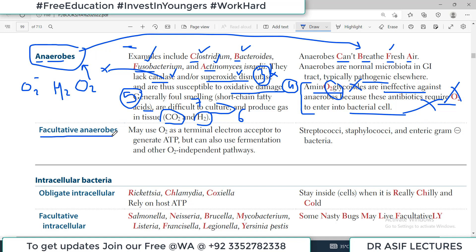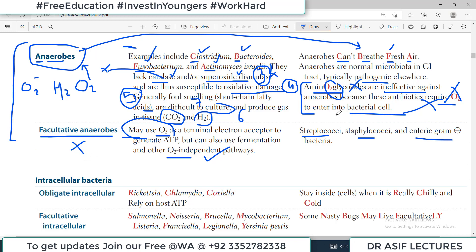Another category is facultative anaerobes. Facultative anaerobes may use oxygen as a terminal electron acceptor to generate ATP, but can also use fermentation and other oxygen-independent pathways. Examples include Streptococci, Staphylococci, and enteric gram-negative bacteria.